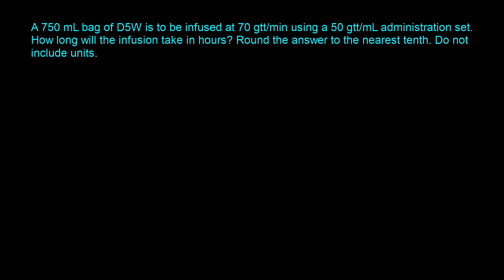Let's take a look at the first question, which reads: a 750 ml bag of D5W is to be infused at 70 drops per minute using a 50 drop per ml administration set. How long will the infusion take in hours? Round the answer to the nearest tenth; do not include units.